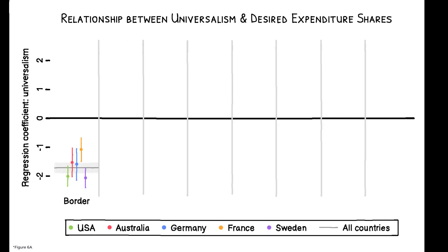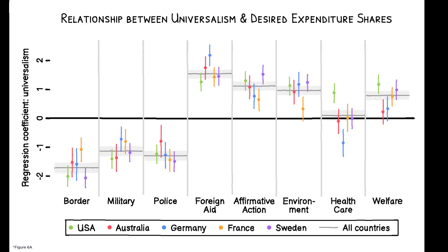To show these phenomena are closely related, each panel here shows the estimated relationship between an individual's level of universalism and their support for a particular policy. For example, this panel shows that in all five countries, there is a strong positive relationship between universalism and support for government spending on foreign aid. Overall, universalism is strongly predictive of respondents' policy views, and in directions that rationalize the patterns we generally see.